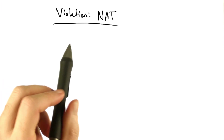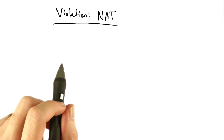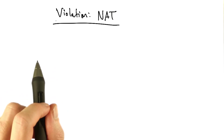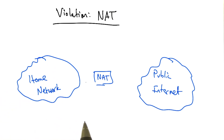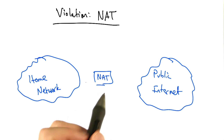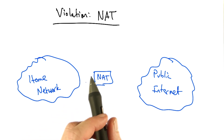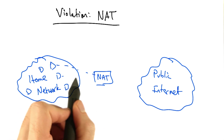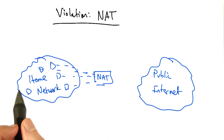A fairly pervasive violation of the end-to-end argument are home gateways, which often perform something called network address translation. In a home network, we have many devices that connect to the network, but when we buy service from our internet service provider, we're typically only given one public IP address. And yet, we have a whole variety of devices that we may want to connect.